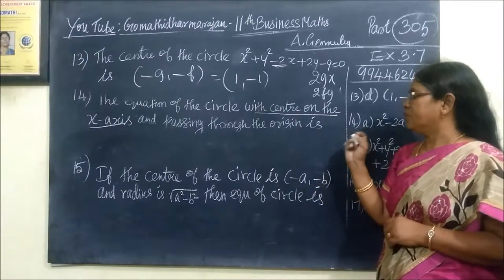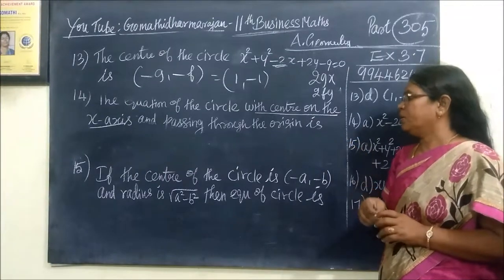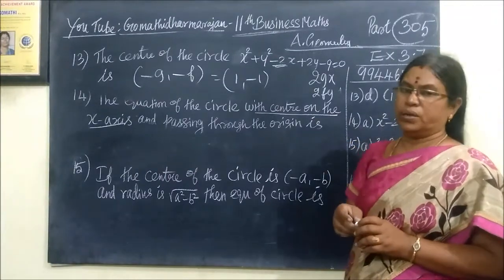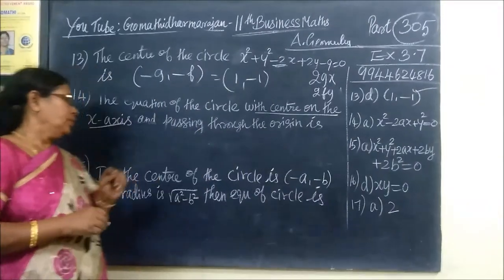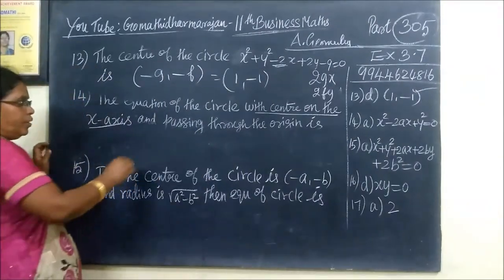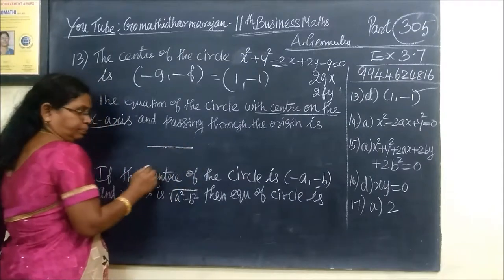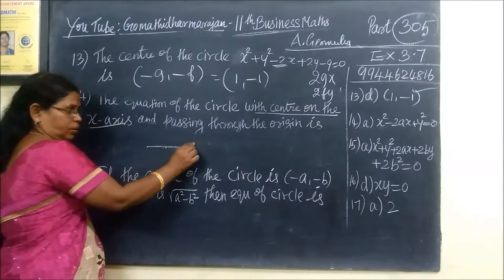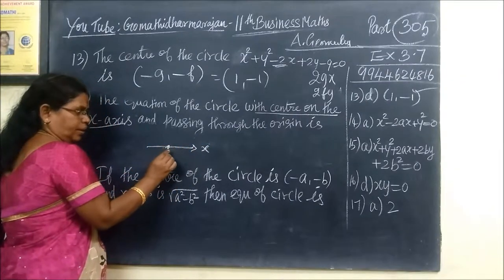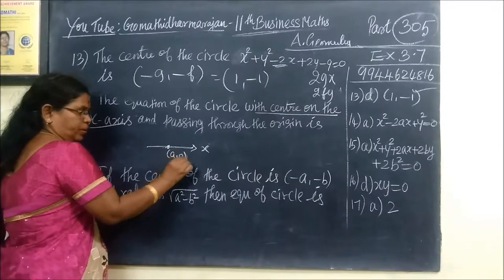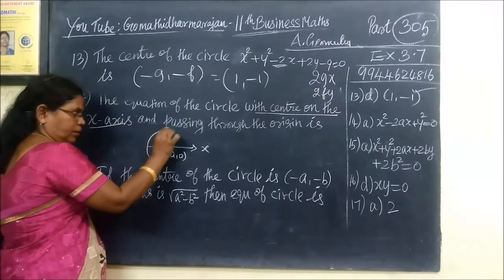Coming to the second problem: the equation of the circle with the center on the X-axis and passing through the origin. Any point on the X-axis is represented as (a, 0), so the center on the X-axis is (a, 0).